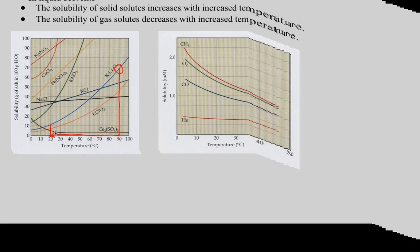That is called a supersaturated solution. You may have had experience with this — have you ever made rock candy at home? You take water, dissolve as much sugar as you possibly can in boiling water. You just made a supersaturated solution. The trick is, instead of dropping in sugar to get it to crystallize, you drop a string into it. That string provides a surface upon which the crystals can form, and you crystallize the sugar onto the string and it turns into candy.